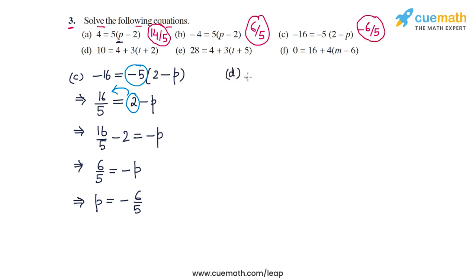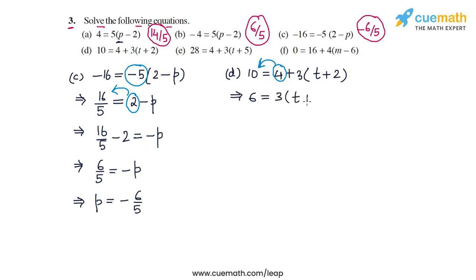In part d, the equation is 10 = 4 + 3 times (t + 2). First, we transpose the 4 to the left side so it becomes minus 4. On the LHS we have 10 - 4 = 6, and on the RHS we have 3 times (t + 2). Then we divide both sides by 3, giving 2 on the left and t + 2 on the right.